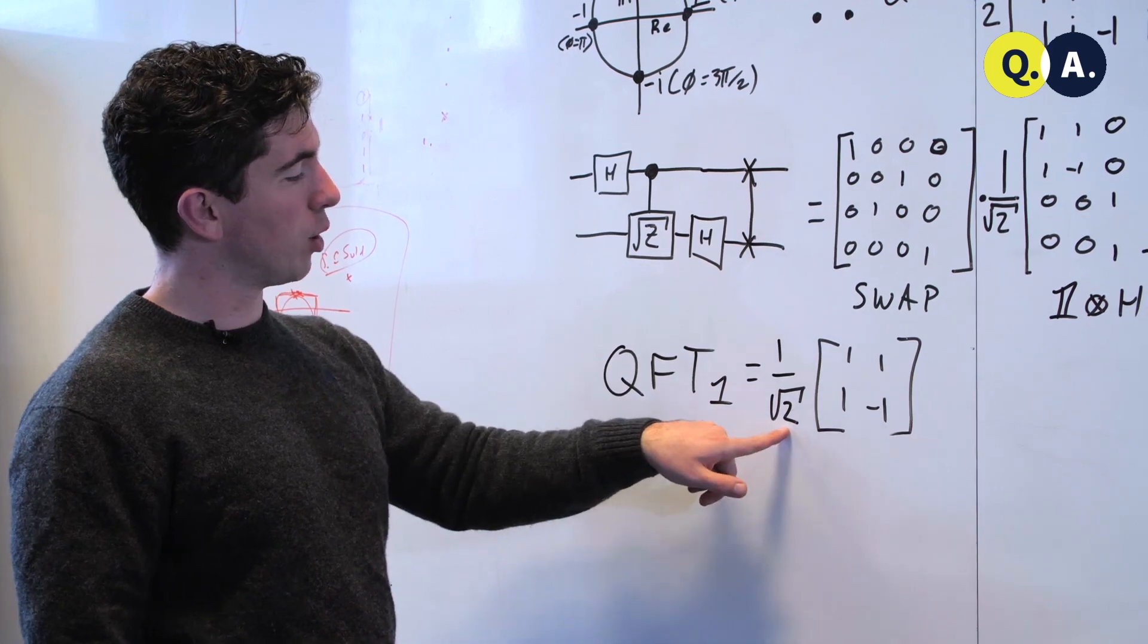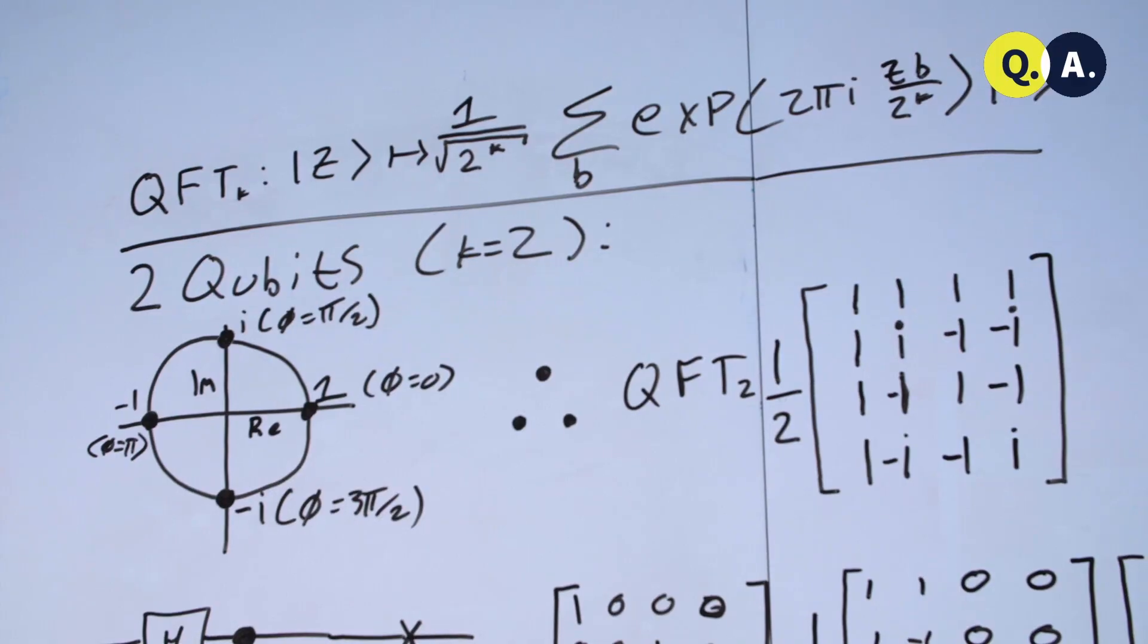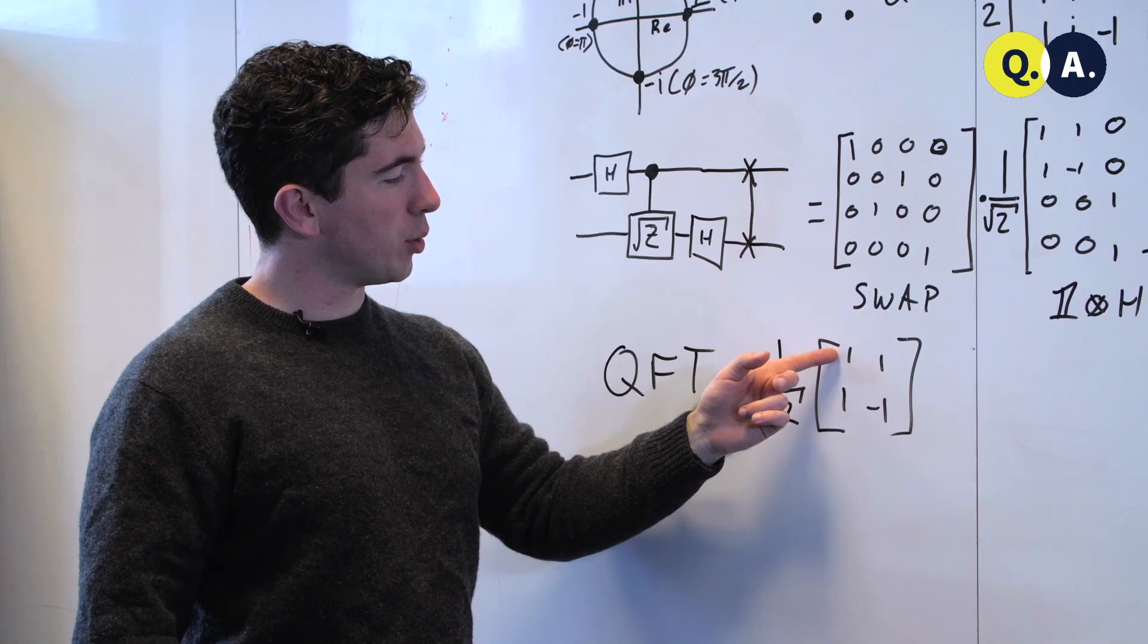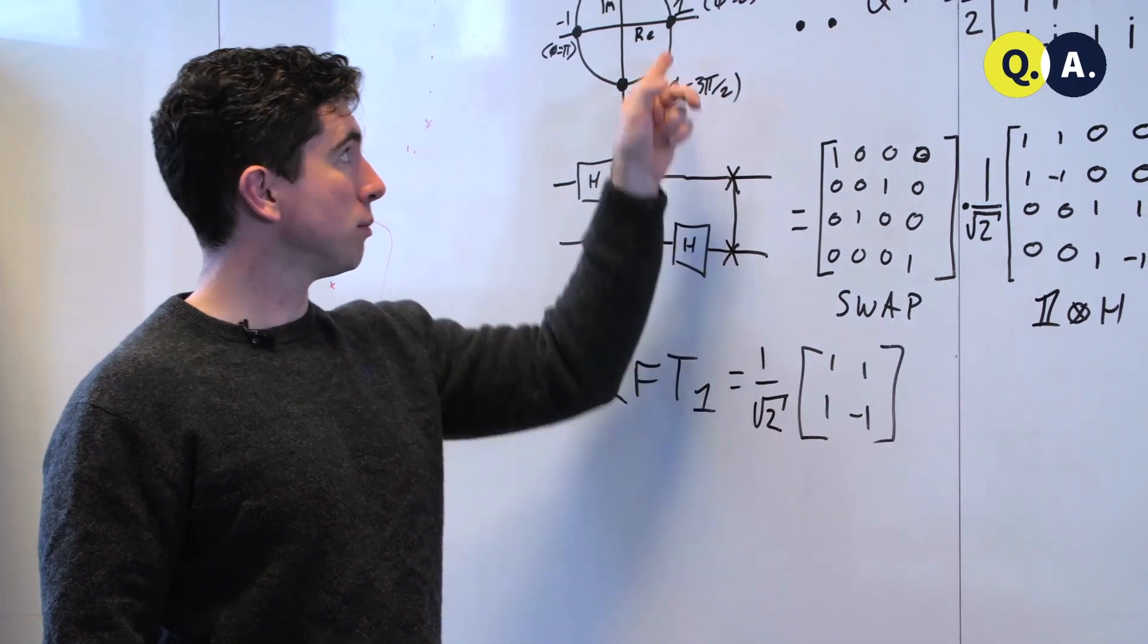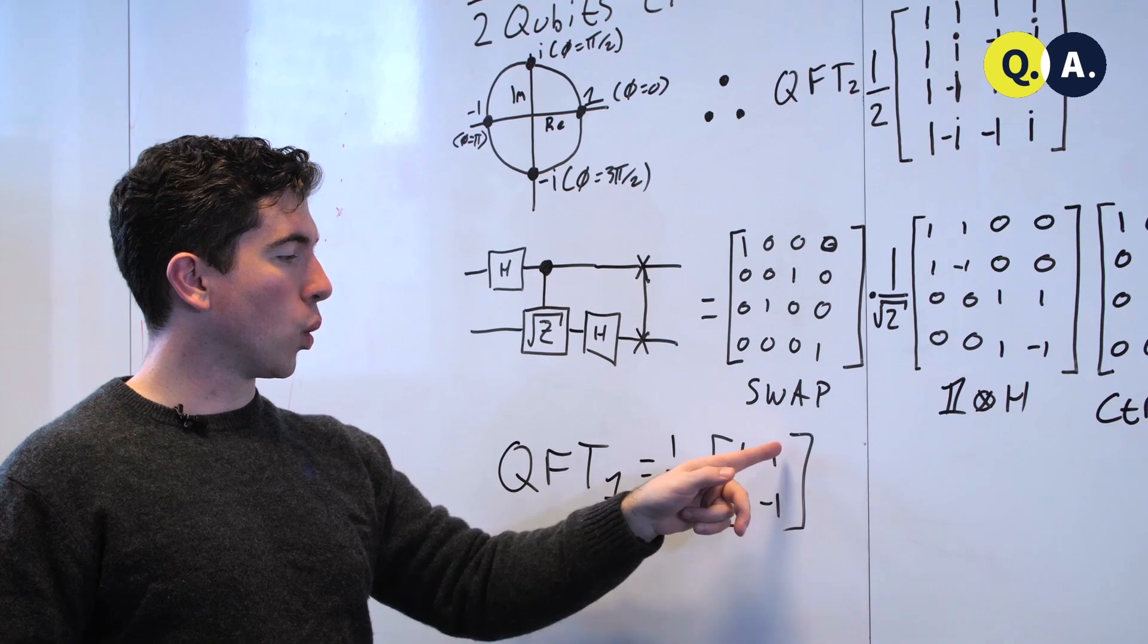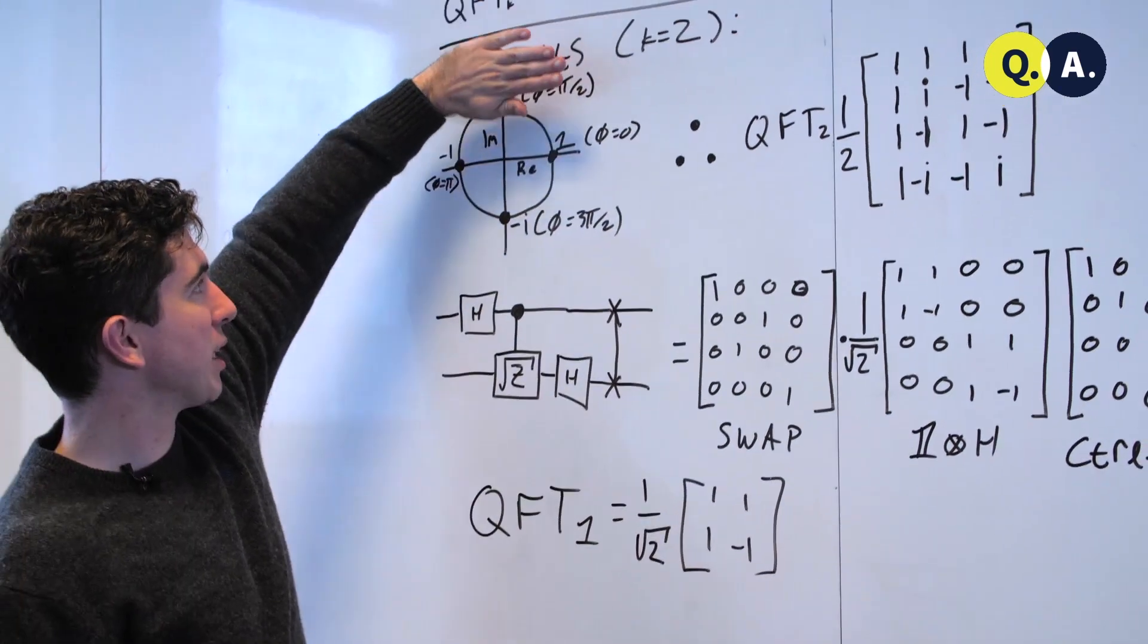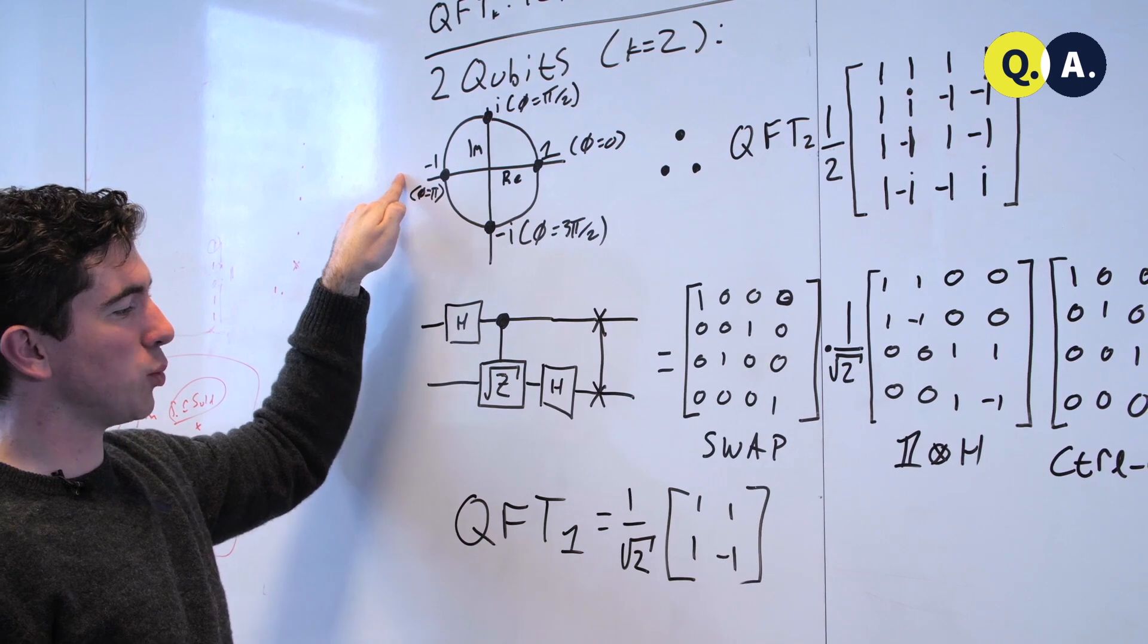On one qubit you have 1 over root 2, because k is just 1, and then you can either proceed around the unit circle zero steps at a time, staying at 1, or one step at a time, but missing this i, so you would just go from 1 to -1.